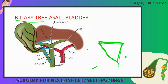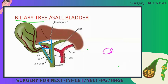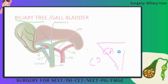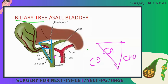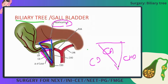Calot's triangle is a small anatomical triangle bounded by the cystic artery above, the cystic duct, and the common hepatic duct (CHD). If instead of the cystic artery the base is formed by the liver, then it is known as the hepatocystic triangle — the name itself says hepatocystic.